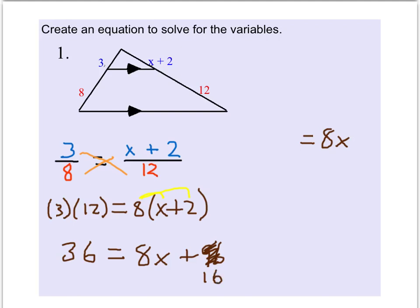8 times 2 is 16. So if we subtract 16 from both sides then we get 8x is equal to 20. Dividing by 8 on both sides gives you that x is equal to 20 eighths which both are divisible by 4, and so we get 5 over 2 is our value of x.